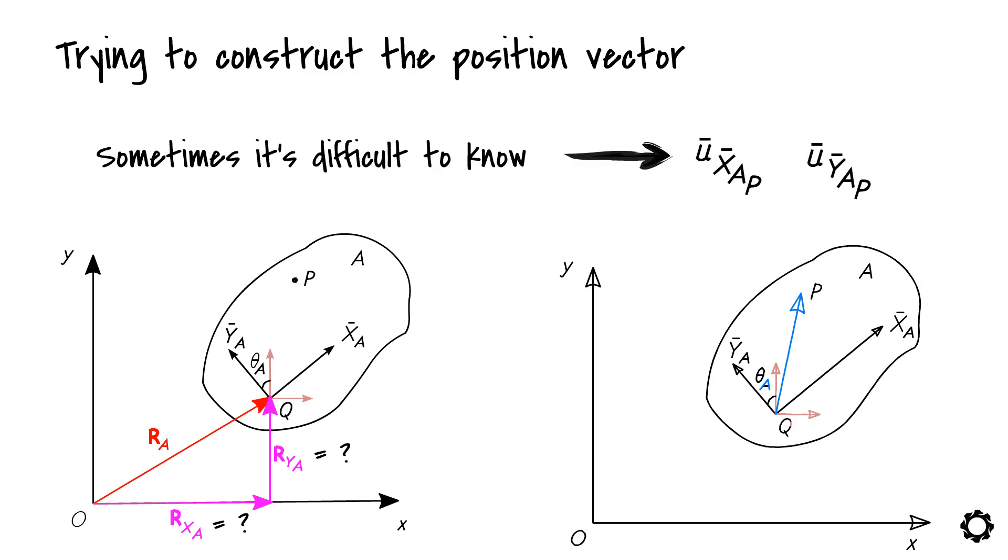How do these body components look like in the global reference system? It doesn't look promising. It looks kind of complex.